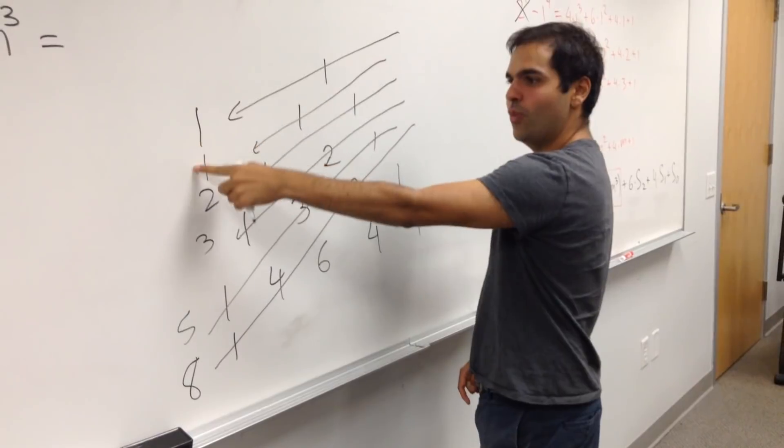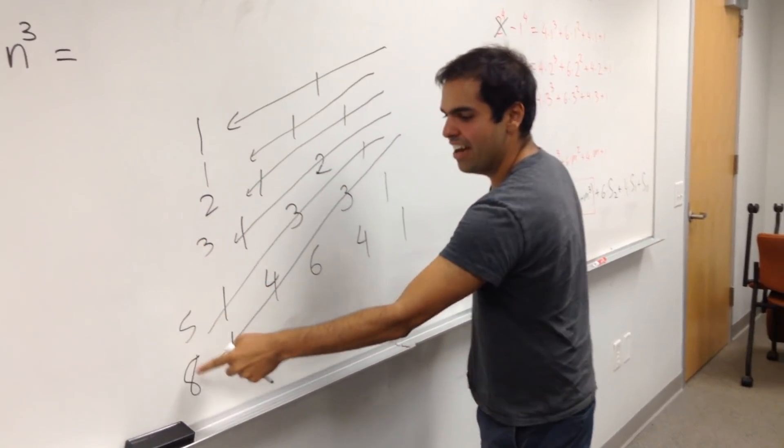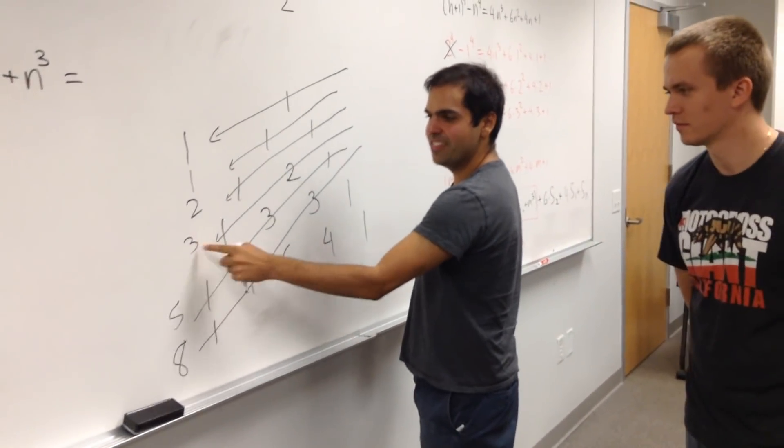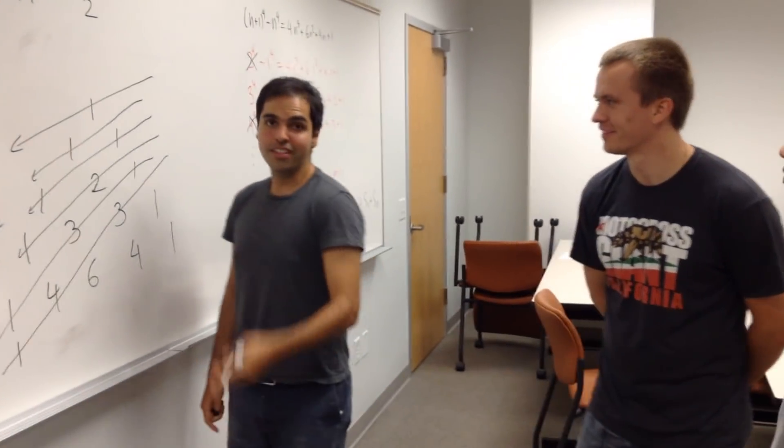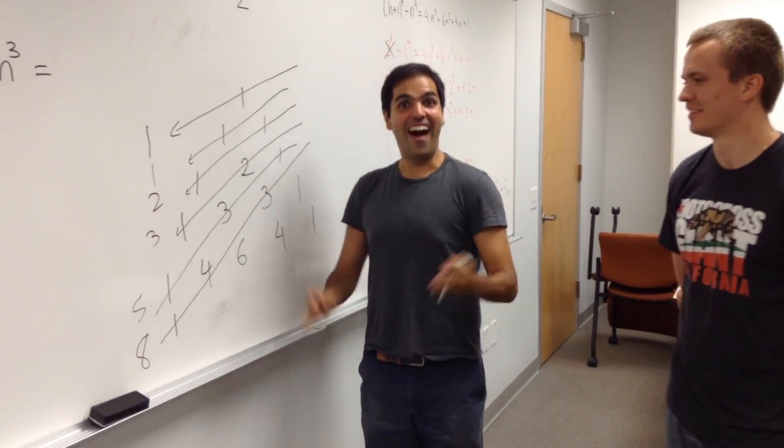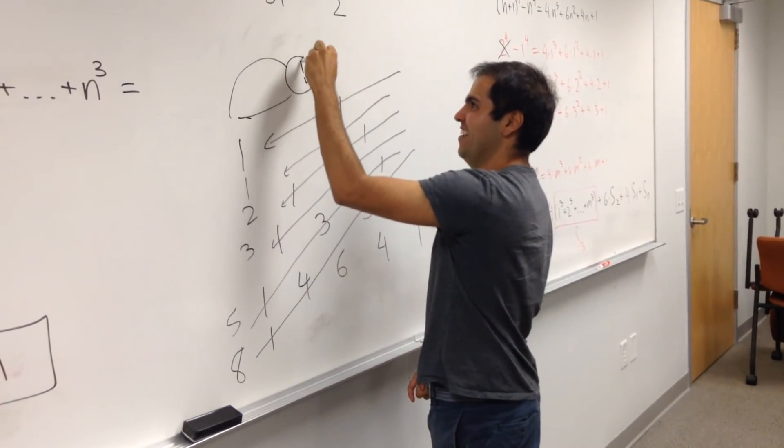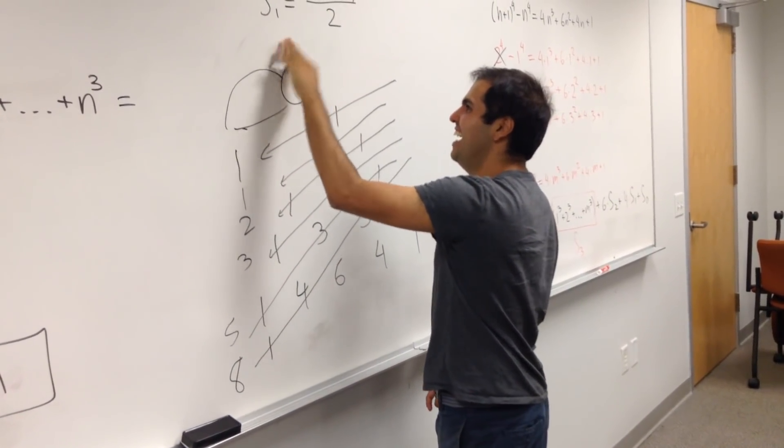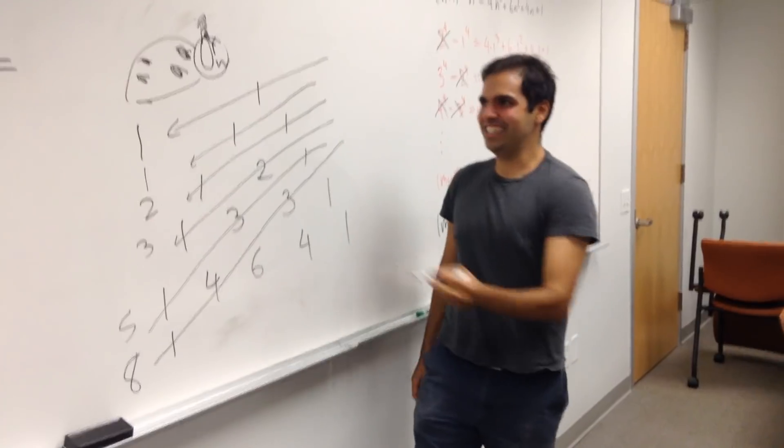So you have the sequence one, one, two, three, five, eight. So every term is the sum of the two previous terms. You get the Fibonacci sequence. Where's the bunny? Oreo! Oh, angry bunny. Fibonacci sequence.